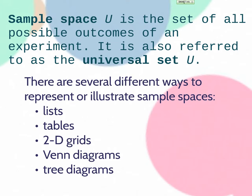So you might hear the word outcomes, all the possible outcomes, sample space, universal set. Those three things mean the same thing.